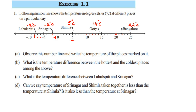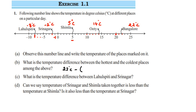The second question asks: what is the temperature difference between the hottest and the coldest place among the above? The highest temperature is Bangalore at 22 degrees Celsius, and the lowest is Lahuspith at minus 8 degrees Celsius. Difference means you have to subtract both temperatures. So we take the larger number first: 22 degrees Celsius minus the temperature of Lahuspith, which is minus 8 degrees Celsius.